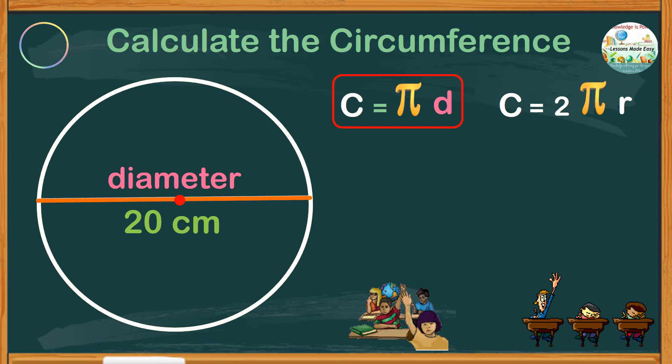It is unwise if you use 2 pi r because using this formula means you have to divide the diameter by 2 to get the radius and then multiply by 2. This is just a waste of time. So let's stick with pi d.